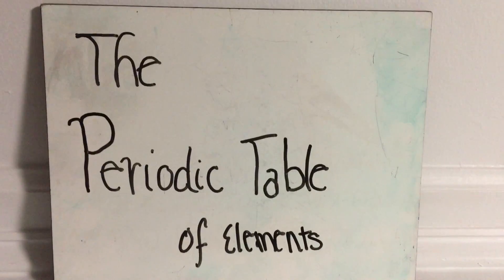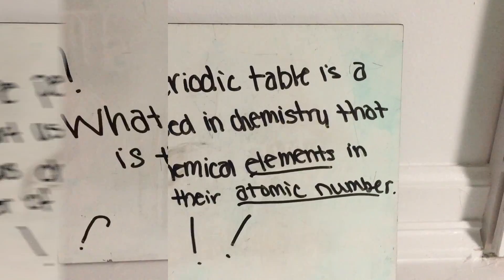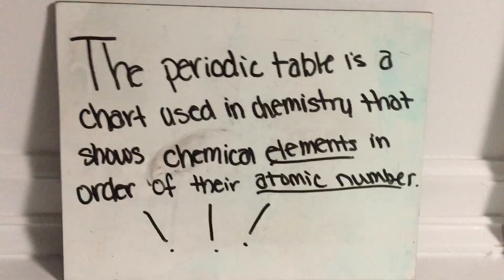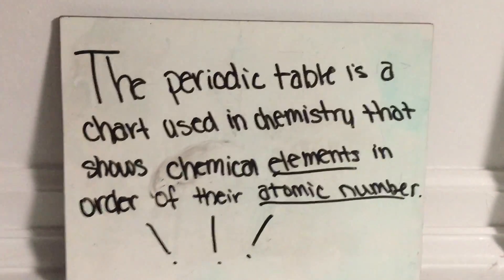Hello class, today we'll be learning about the Periodic Table of Elements. Can anyone tell me what the Periodic Table is? The Periodic Table is a chart used in chemistry that shows chemical elements in order of their atomic number.